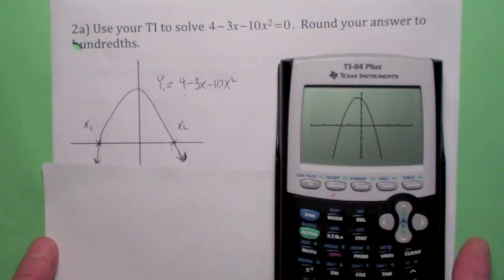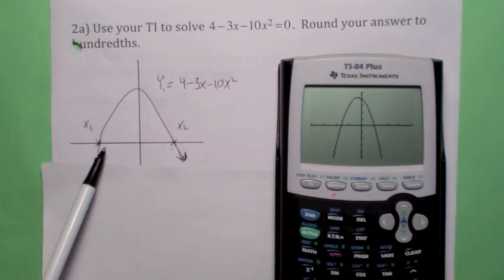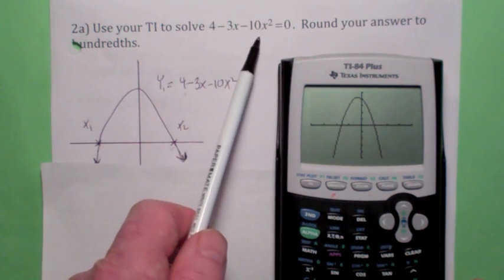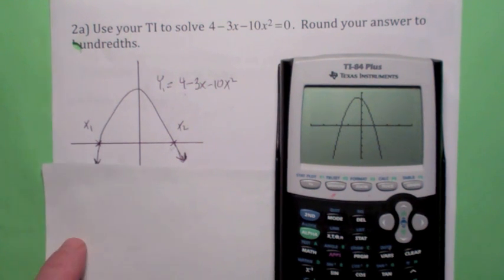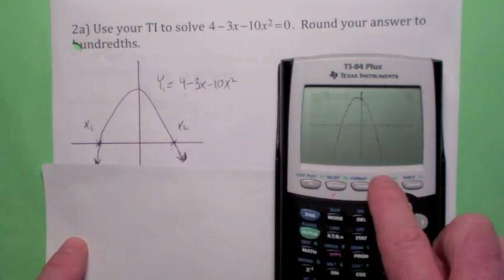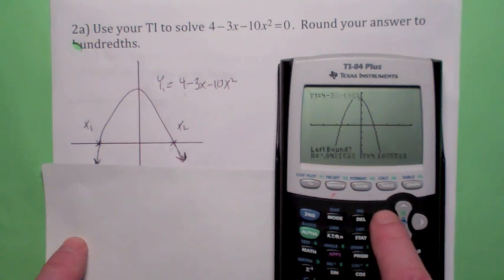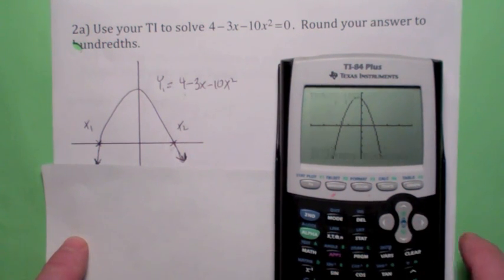All right, so let's use the zero feature. Now remember, the x-intercepts of this function are the solutions to this quadratic equation. There's two real solutions because there's two x-intercepts, okay? Second calc, zero. Let's get to the left of this first one. Hit enter, get to the right of it, hit enter a second time, get close to it, hit enter a third time. I get exactly negative 0.8.